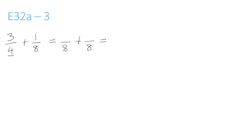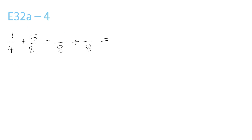This one — 4 and 8 both go into 8 again. 4 times 2 is 8, so you have to times the top by 2. 3 times 2 is 6, so you put the 6 here. This is already over 8, so you have 1 over 8. That gives 7 over 8 because 6 plus 1. Then 4 and 8 both go into 8. 4 times 2 is 8, so 1 times 2 is 2. You bring the 5 over and keep it the same — 2 plus 5 is 7 over 8.